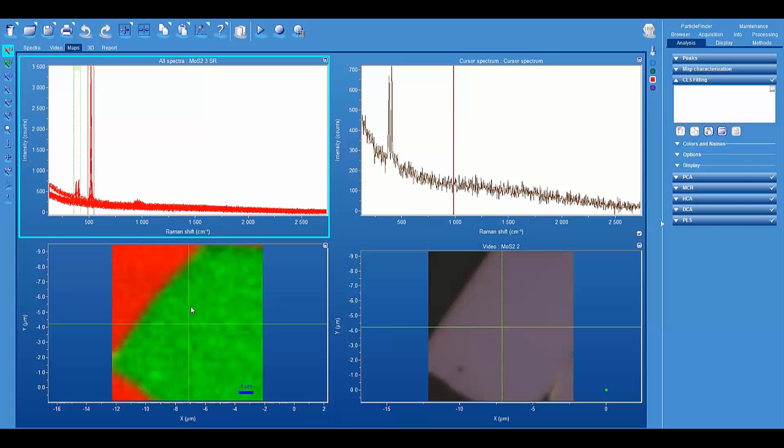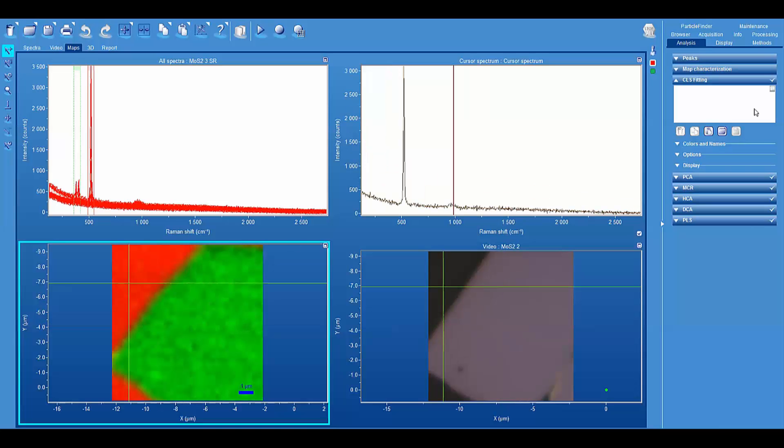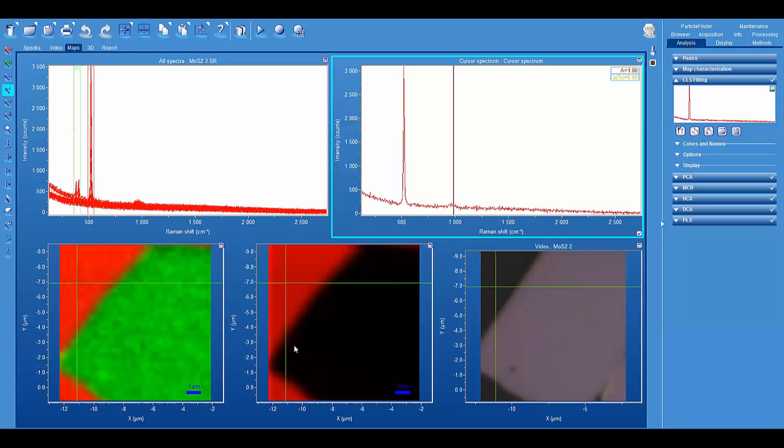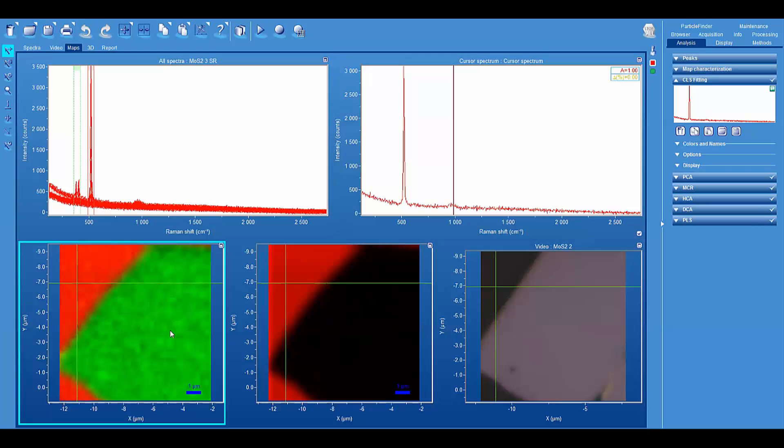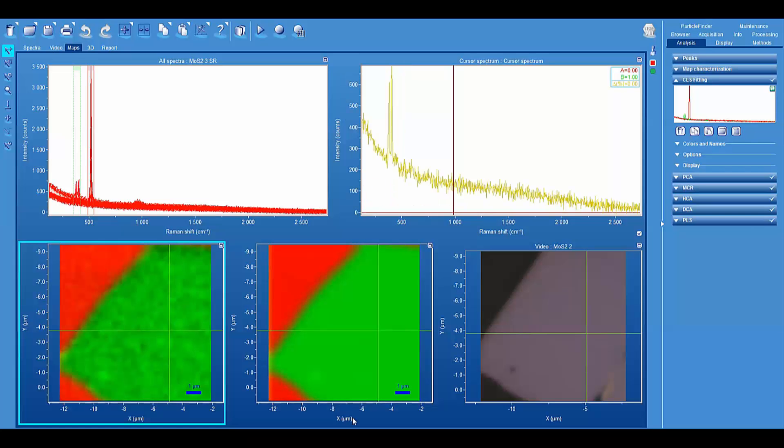Okay, so now we again generate our classical least squares image. Okay, there's our silicon component. So now our molybdenum disulfide component. And again, this is for 50 millisecond per point integration time. So that's pretty fast imaging.